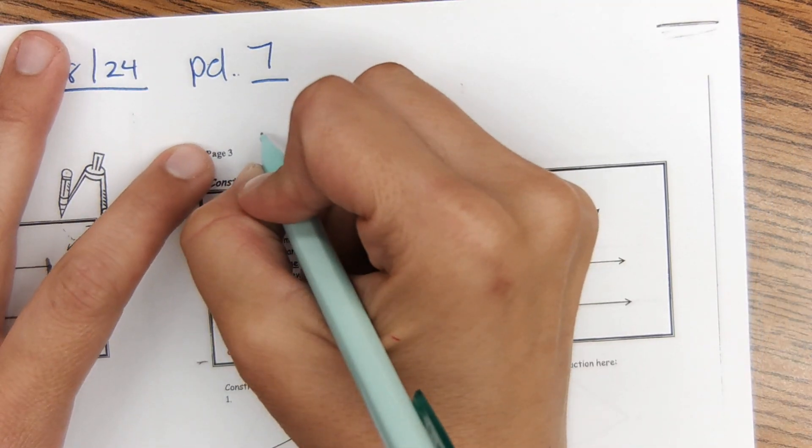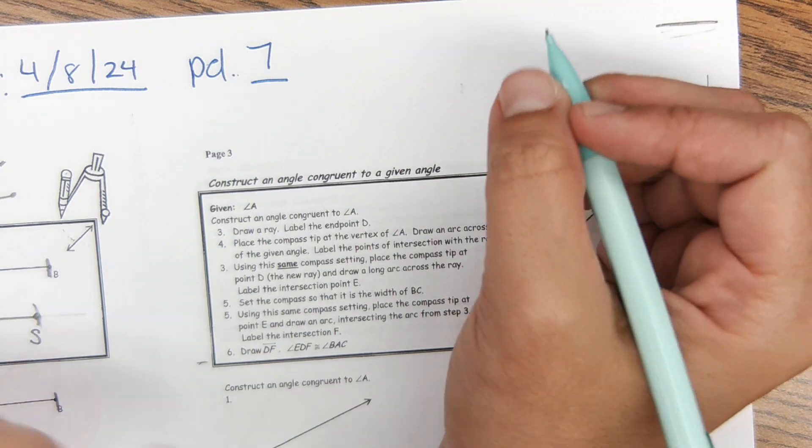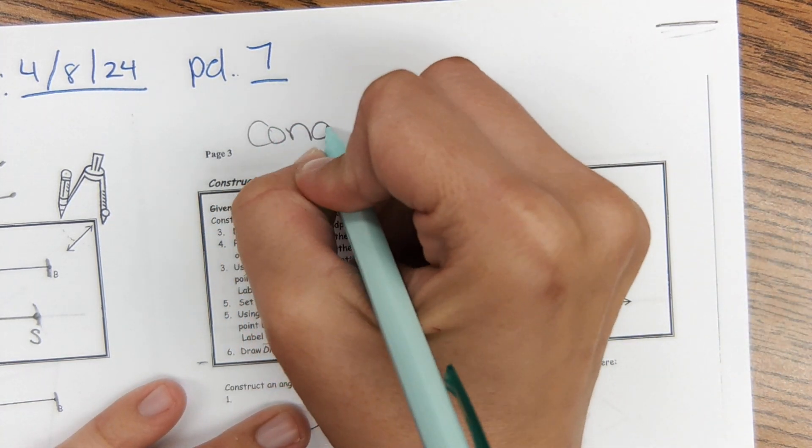The next one is congruent angles. So we did congruent segments where we made two segments that were the same. Now we're going to make two angles that are the same.